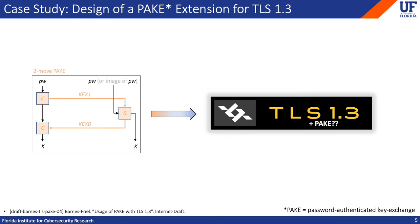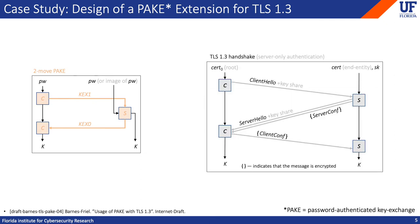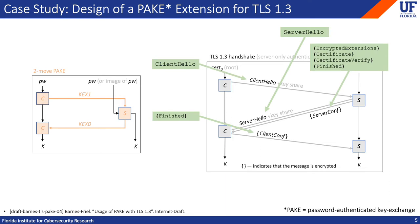So let's think about how we might integrate a PAKE into the TLS protocol. Here we see a simplified view of the TLS 1.3 handshake. The client and server exchange three flows before they derive a session key. In the first flow, the client sends its Diffie-Hellman key share to the server. In the second flow, the server sends its own key share to the client, as well as the server's confirmation message. And in the last flow, the client sends its own confirmation message to the server. For our purposes, all that really matters is that the key exchange messages are sent in the clear, whereas the confirmation messages depend on keys derived from the shared secret.